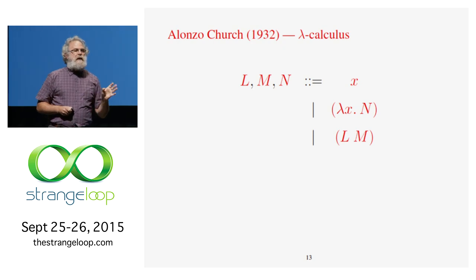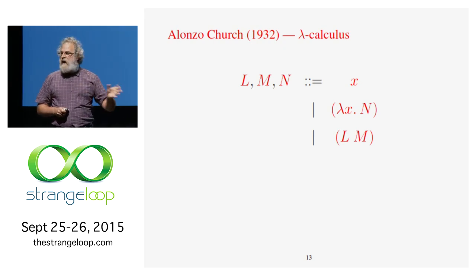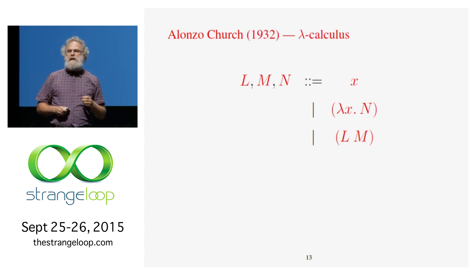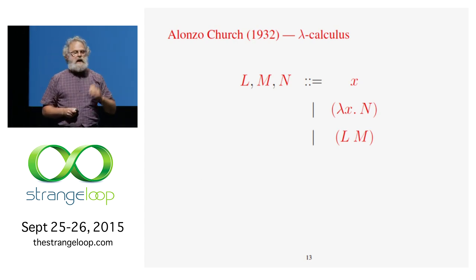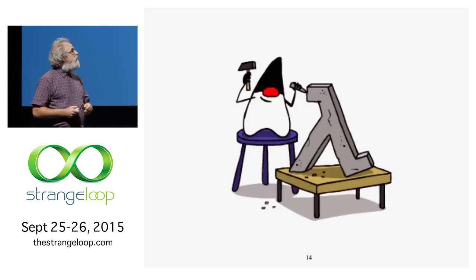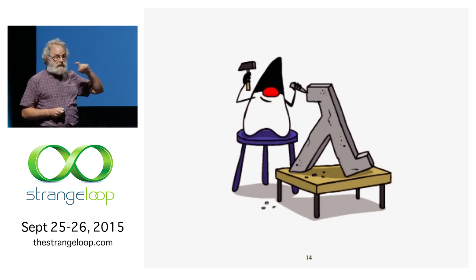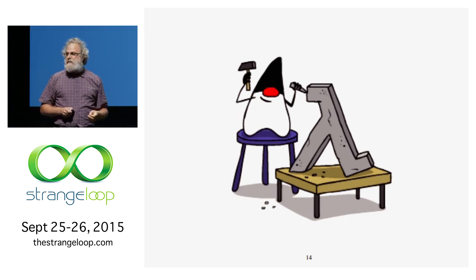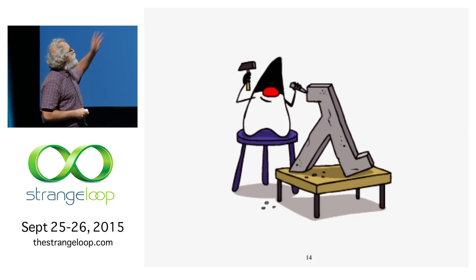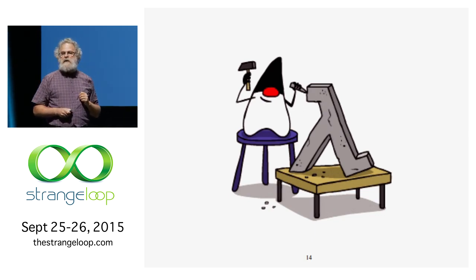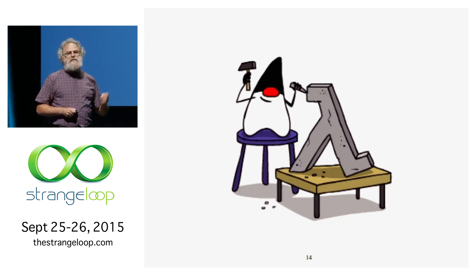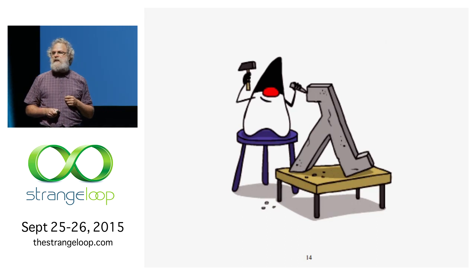For many years, me and my colleagues have worked with functional languages, which are based on lambda calculus. And for many years, people in industry managed to pretty much ignore everything we do. Of course, these days lambdas have become very trendy — you have lambdas in C++, lambdas in Python, and lambdas in Java. So there's Duke, the icon for Java, looking very smug. Congratulations, Duke — you have finally caught up with where Alonzo Church was in the 1930s.